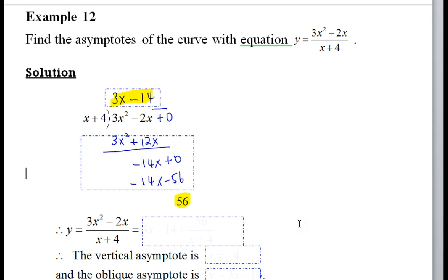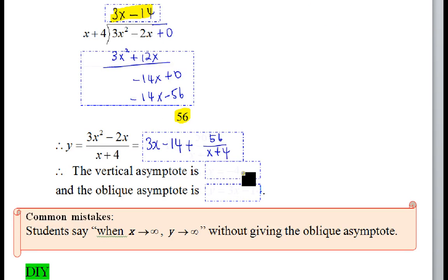So, the quotient now is 3x minus 14. The remainder now is 56 over x plus 4. Are we able then to read from this form the vertical asymptote? Actually, vertical asymptote, no need to read from this form. It can actually read from here. Alright? As denominator, you look at the denominator, you will know. Denominator, you will know. Yes?